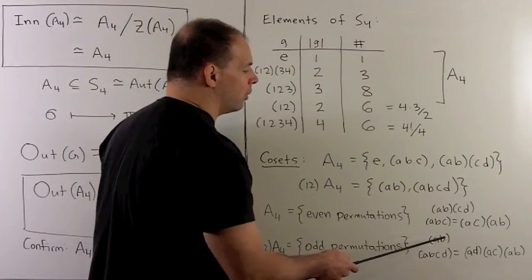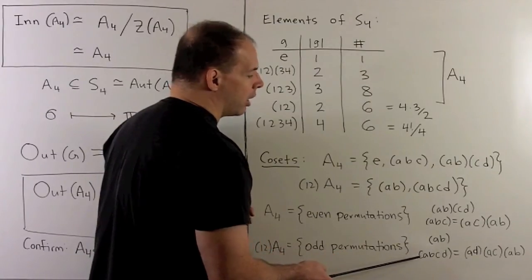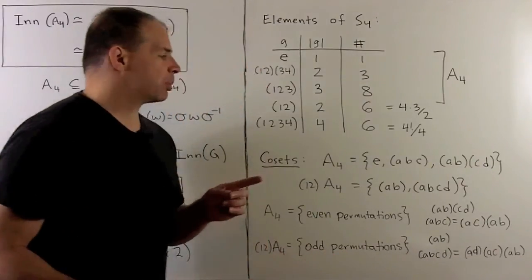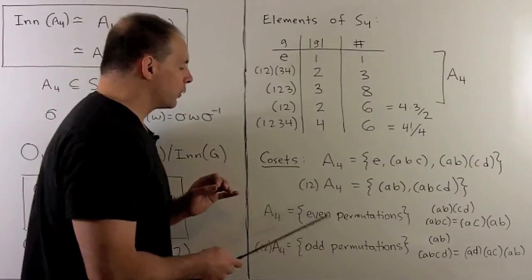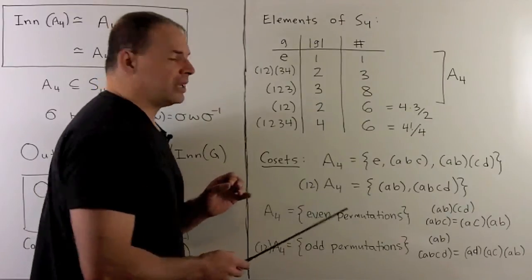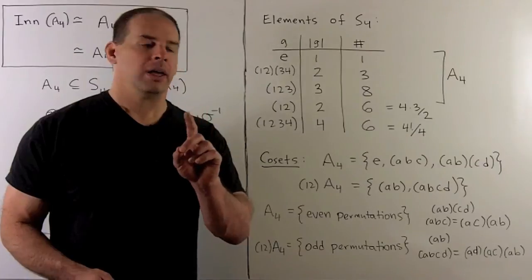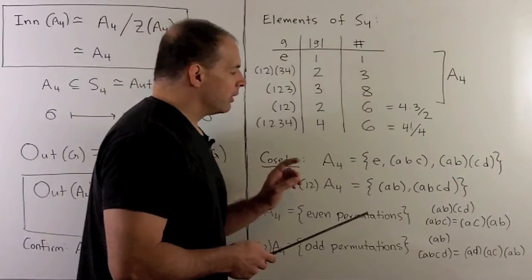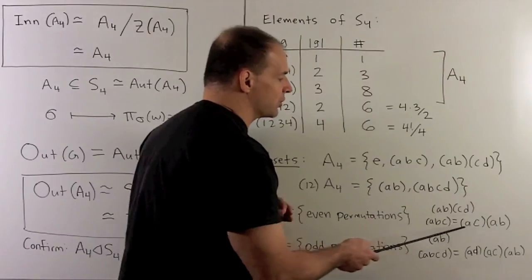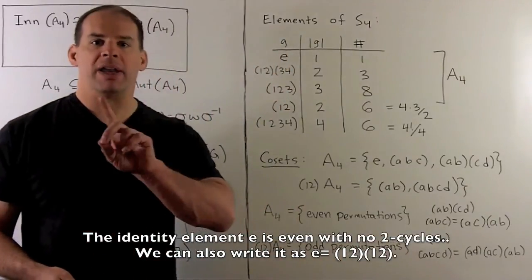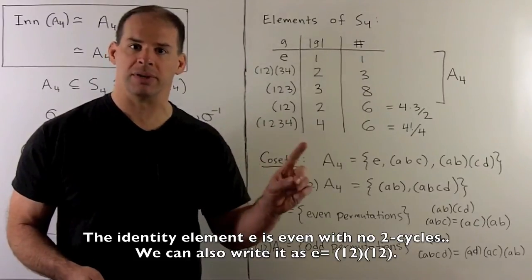For the odd permutations, for a two cycle we have a single two cycle. For a four cycle I can write that as a product of three two cycles. So what we're measuring with our cosets are how many two cycles do you need to write your permutation. Note we'll have to show that if we rewrite our permutation in different ways using different two cycles, we might not have the same number of two cycles, but we always have the same parity: it's either always odd or always even.